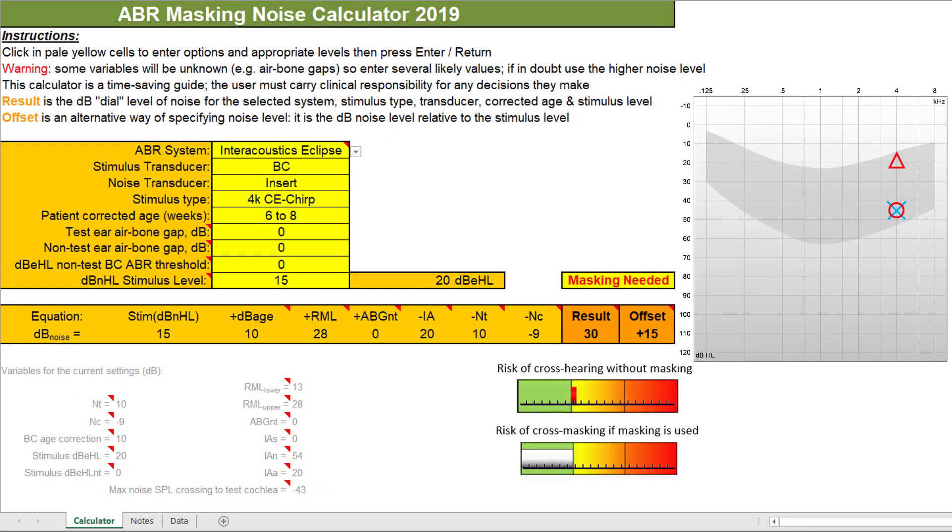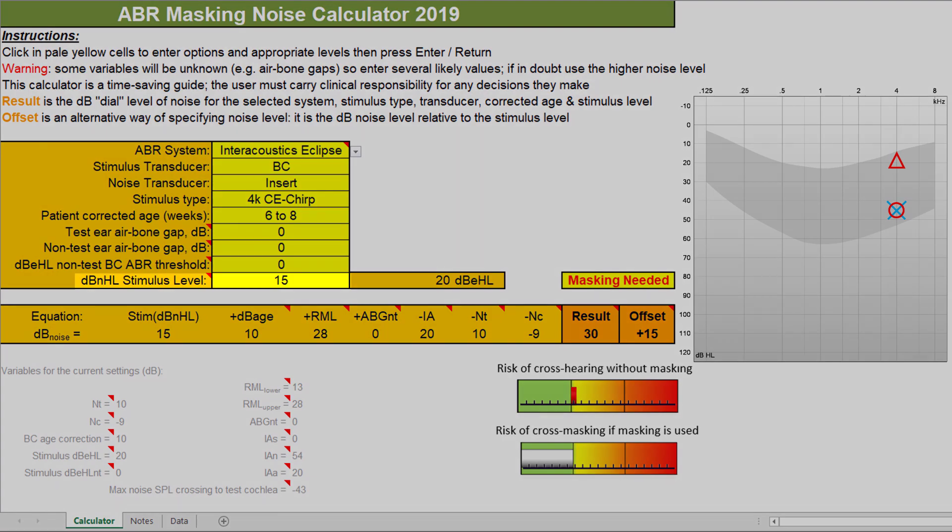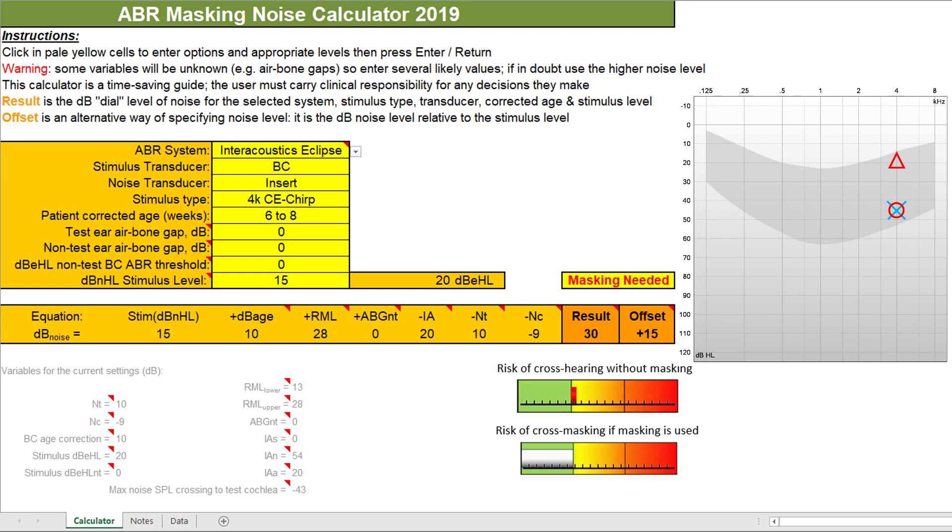It is important to enter the basic information first. This includes selecting the ABR system, transducers, stimulus type, and the corrected age of the patient. The stimulus level is the bone conduction value that you wish to test. Usually, you would start with the not masked value that you have recorded to assess whether this continues to display a response when masking noise has been applied.